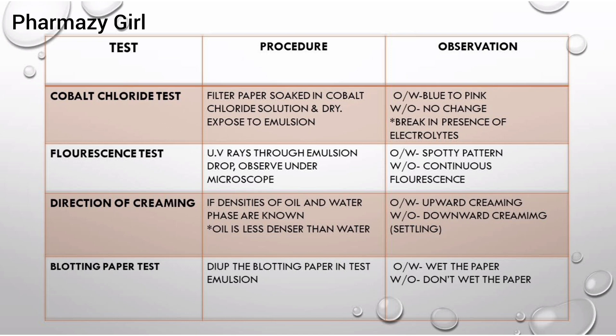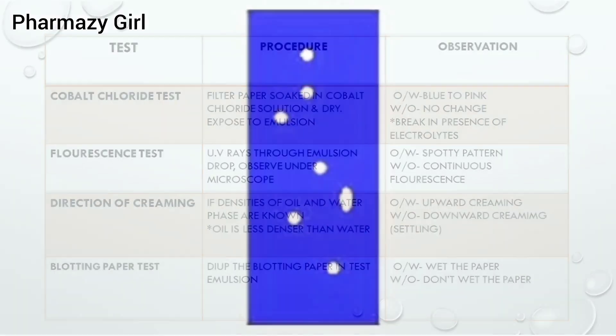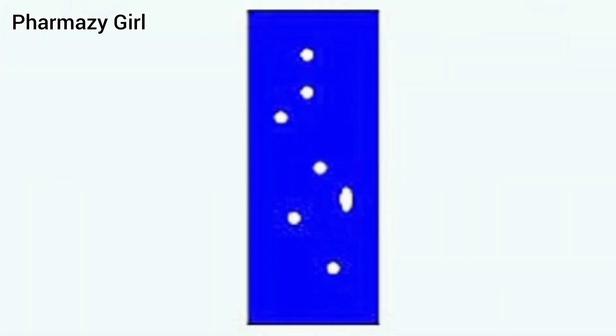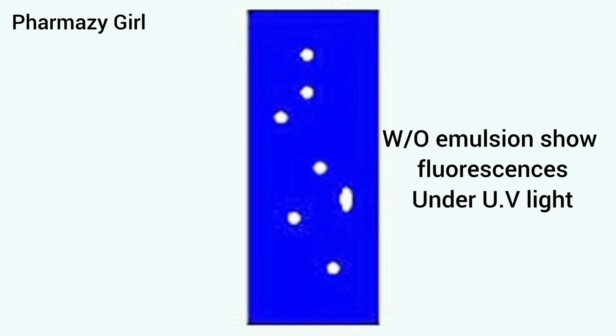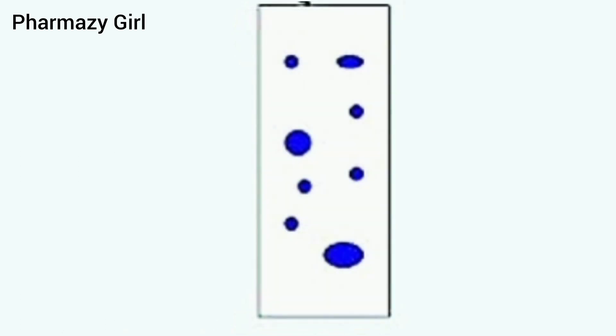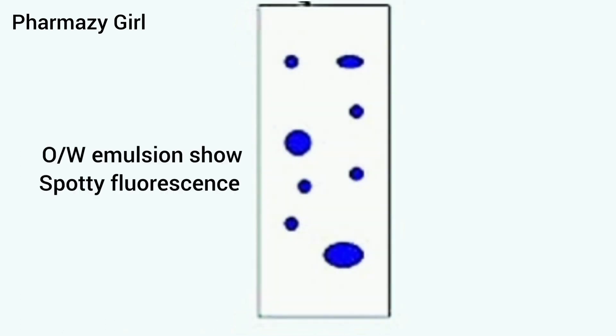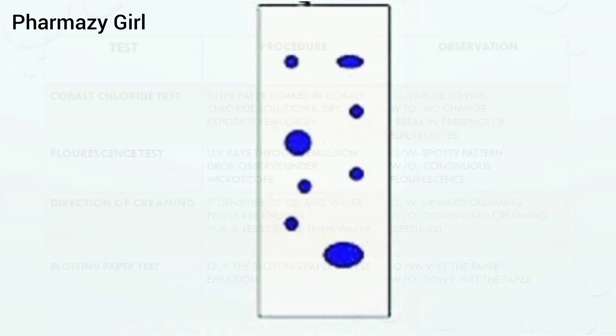The fifth identification test is the fluorescence test. In this test, UV rays are passed through the emulsion and the emulsion is observed under the microscope. Some oils have the property to show fluorescence in the presence of UV light. Thus, continuous fluorescence is observed in water in oil emulsion under UV light, and oil in water emulsion shows spotty fluorescence.